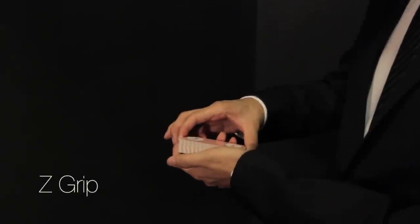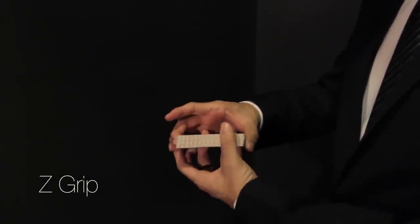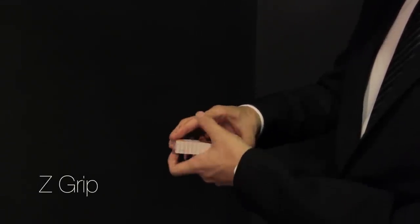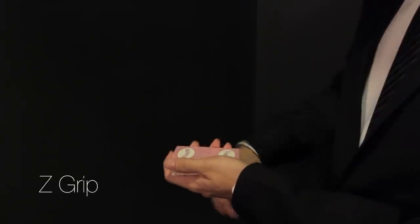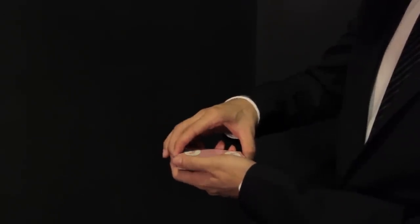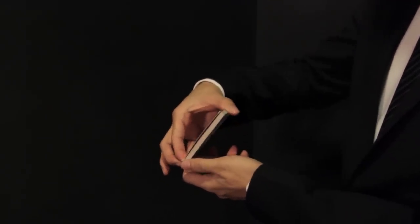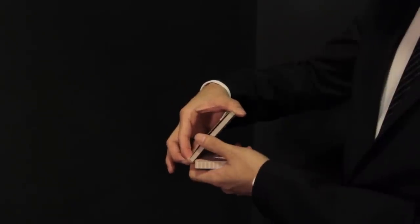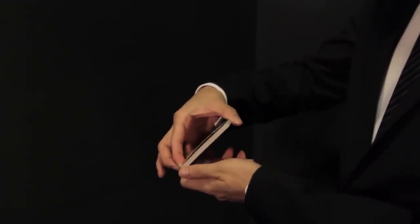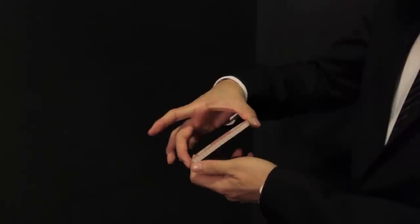Z-grip. This is a common grip for two-handed cuts. Begin in mechanics grip and biddle grip. Using your thumb, lift up about a third of the packet. This packet is held between your left index finger and right thumb.